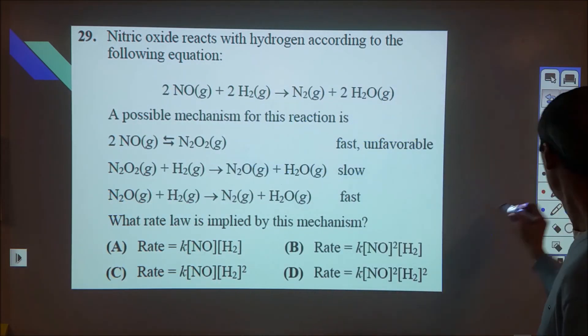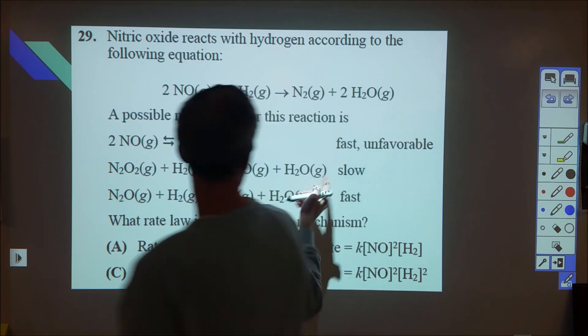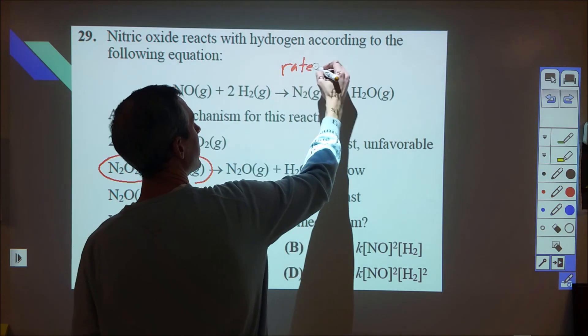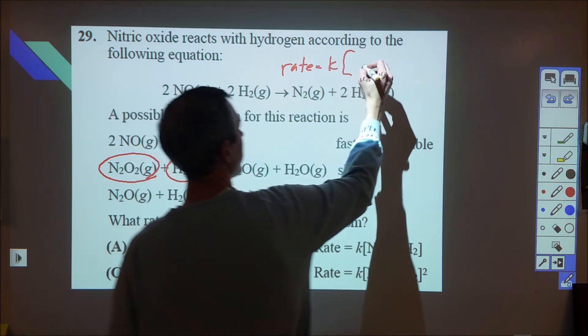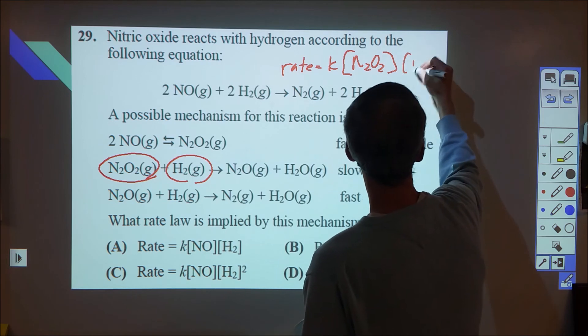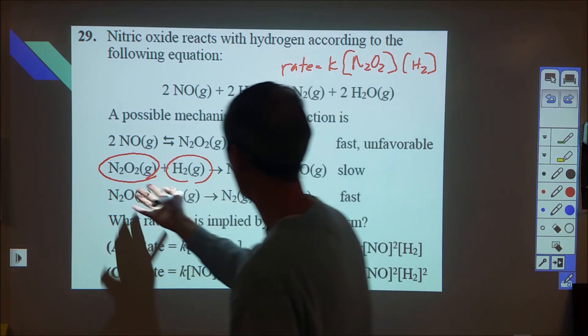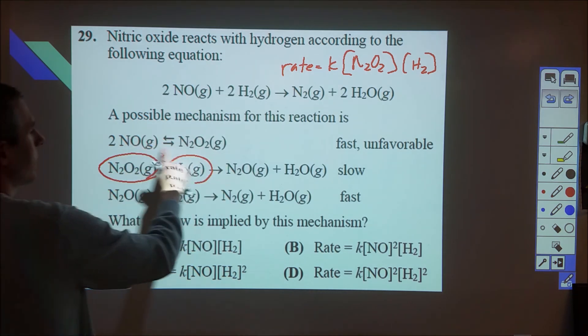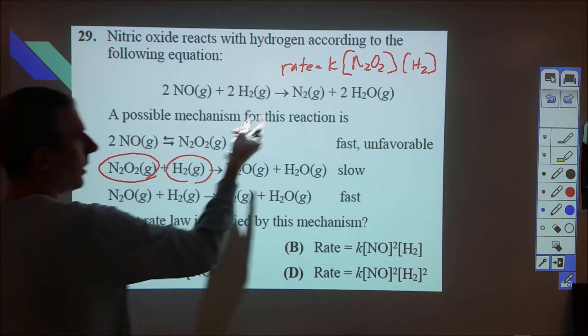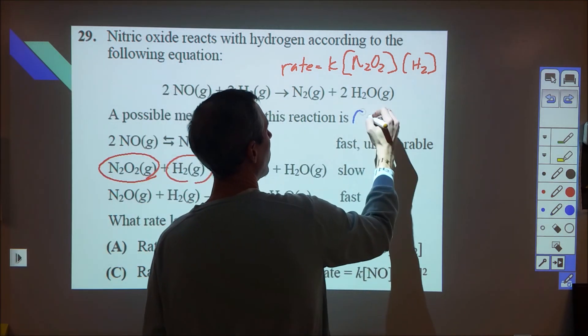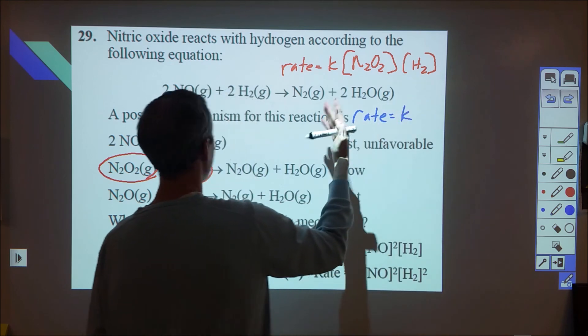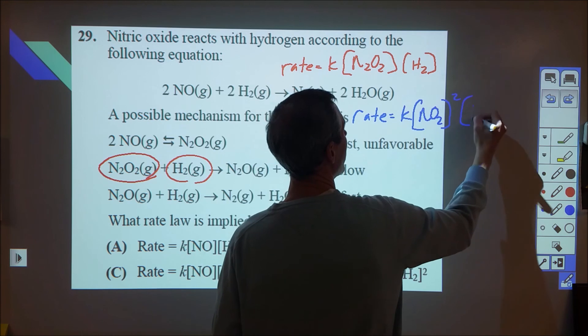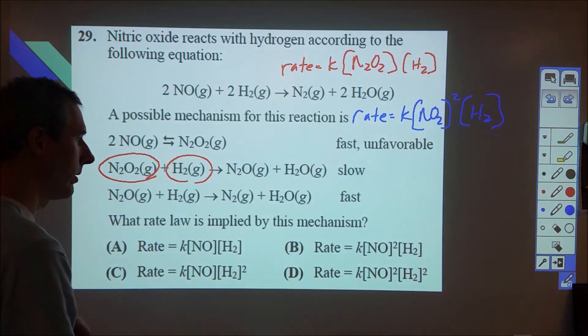Okay, and then another pretty simple one here. So here we have the slow step is here, so our rate is going to be dependent upon those two factors. So we have our rate law equal to K times N2O2 times H2, but we don't want an intermediate to be present in our rate law, so we're going to go back where did the N2O2 come from. We have an equilibrium established here, so we can go ahead and replace this with these while switching around some of the rate constants. But we get a new rate constant, so we don't care. And we end up with N2O squared times H2, and that was B.